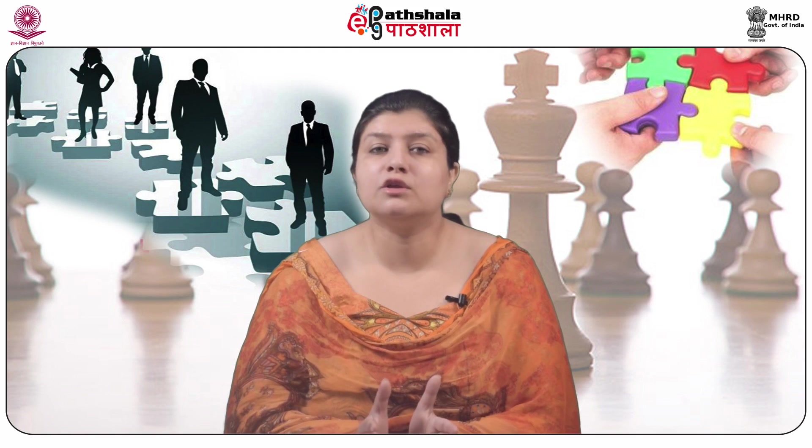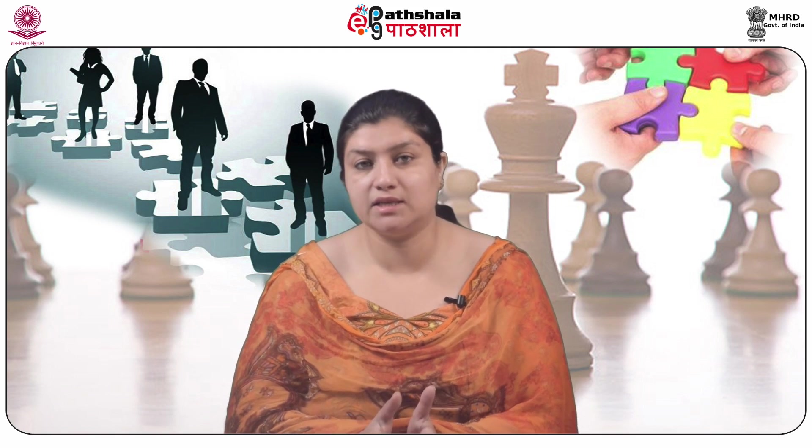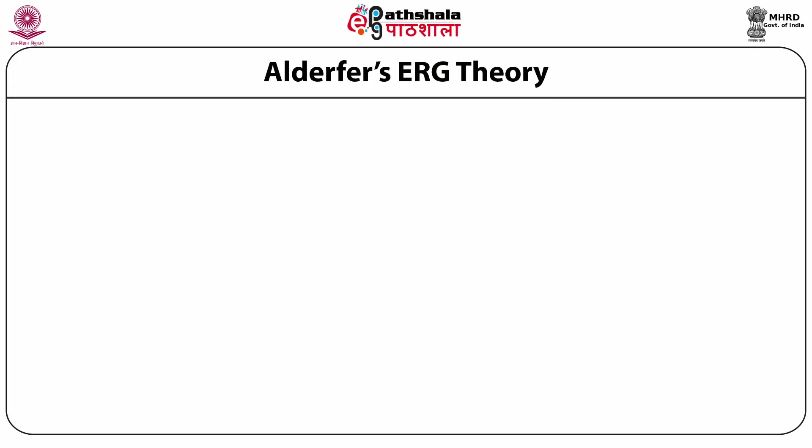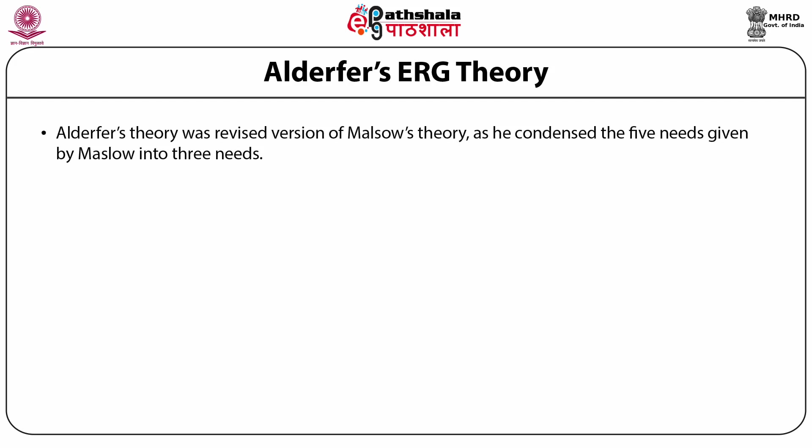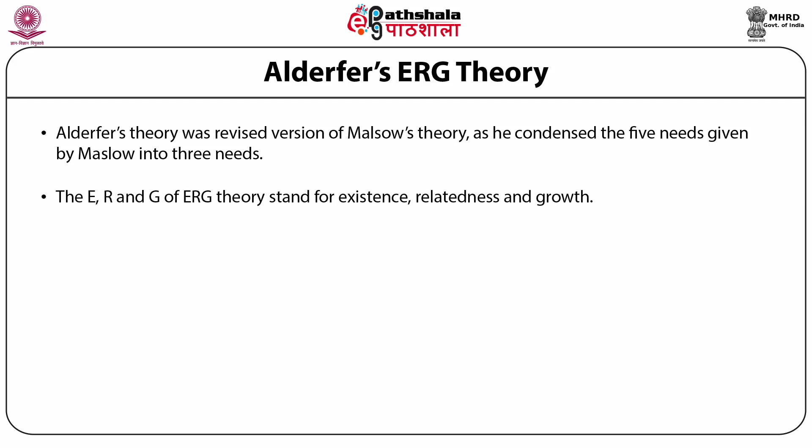Both factors contribute to job satisfaction and dissatisfaction. The third theory of motivation is Alderfer's ERG Theory. This theory is the revised version of Maslow's Need Hierarchy Theory, as Alderfer condensed the five needs given by Maslow into three needs. The E, R, and G of ERG theory stand for existence, relatedness, and growth.